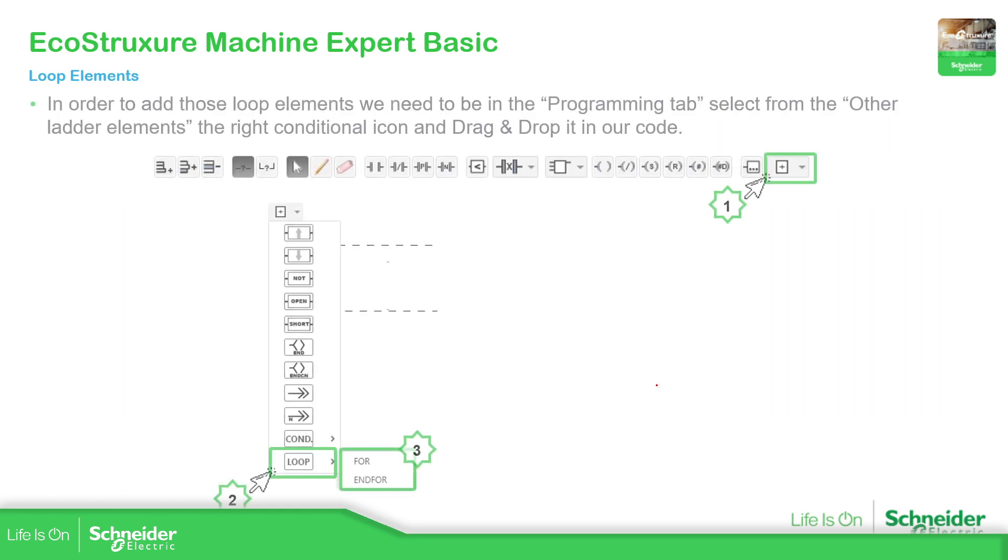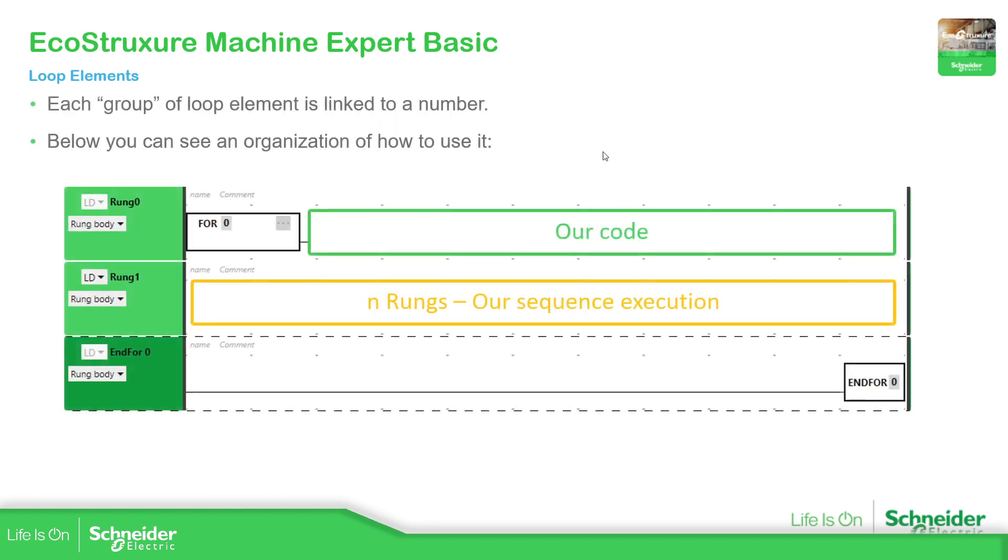So if we continue with this, in order to add this loop element which is the FOR, what we need to do is go to programming tab, select the other functionalities that we have and select the loop. In the loop we have the FOR and the ENDFOR. So we just need to click and then click in our code where we want to use it.